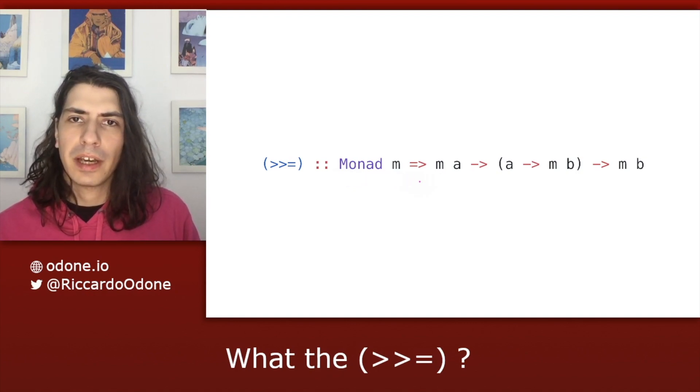Also, as you can see, we have the monadic context wrapping up the initial value m of a and the return value inside of the step function, this m of b here.